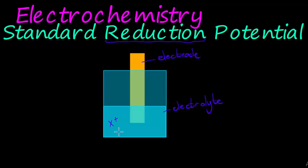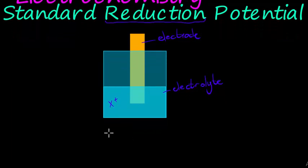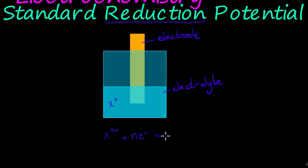Reduction potential is the ability of a cation to gain electrons. The half reaction would be: the cation has some sort of positive charge, it will gain a number of electrons to satisfy that positive charge. That is a reversible reaction, and it produces a substance. This electrode is usually made out of that substance.